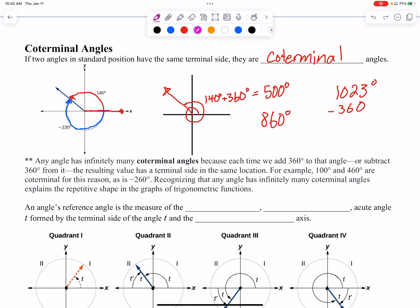And then they give an example there. So for example, 100°, 460° are coterminal, as is negative 260°. They minus 360° from 100°. So we add or subtract full rotations out. So keep that in mind, that we're adding and subtracting full rotations to land on the same terminal. And again, they have infinitely many coterminal angles.